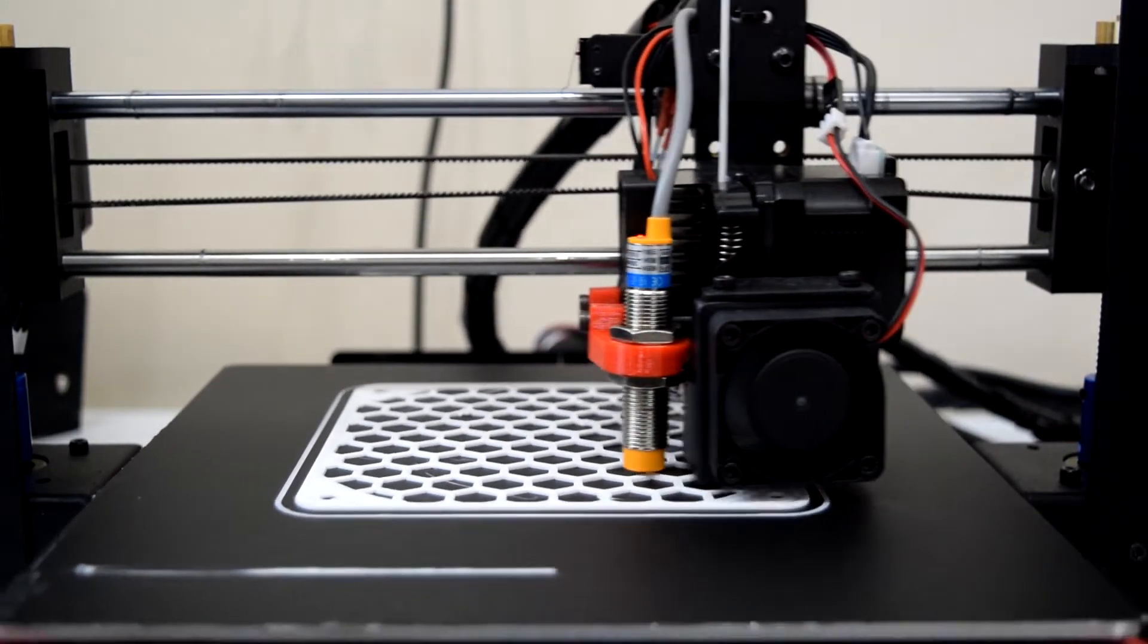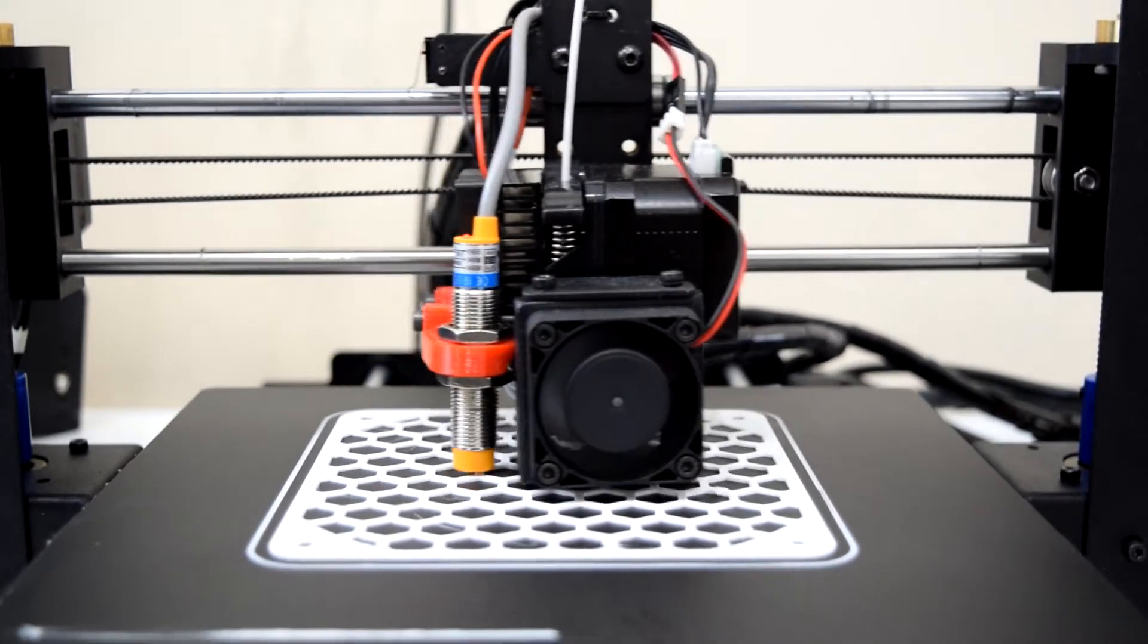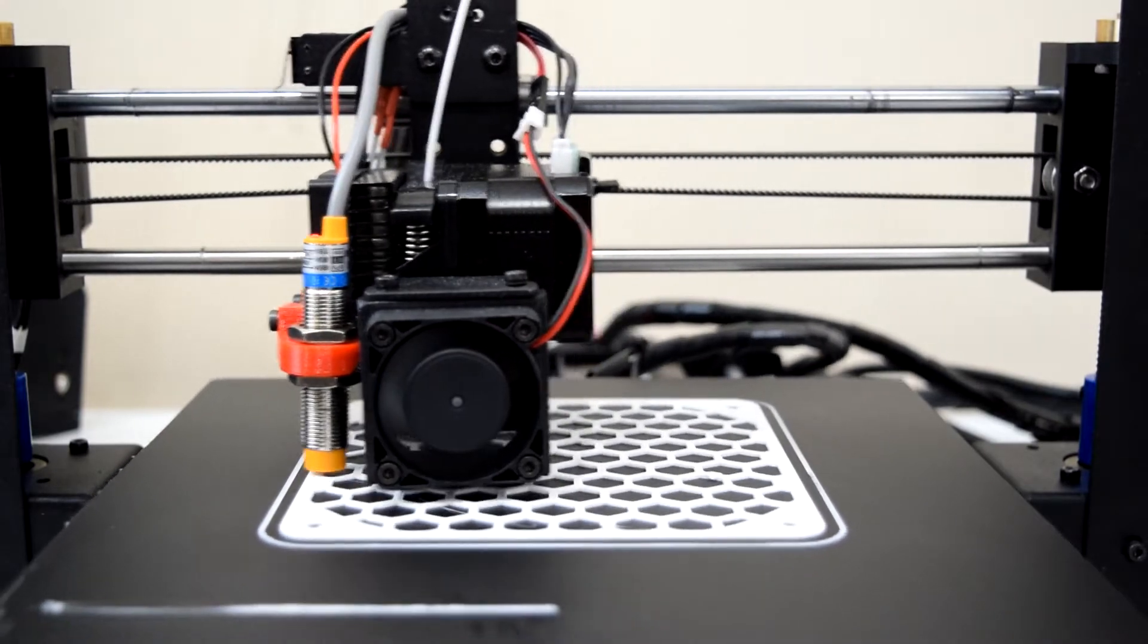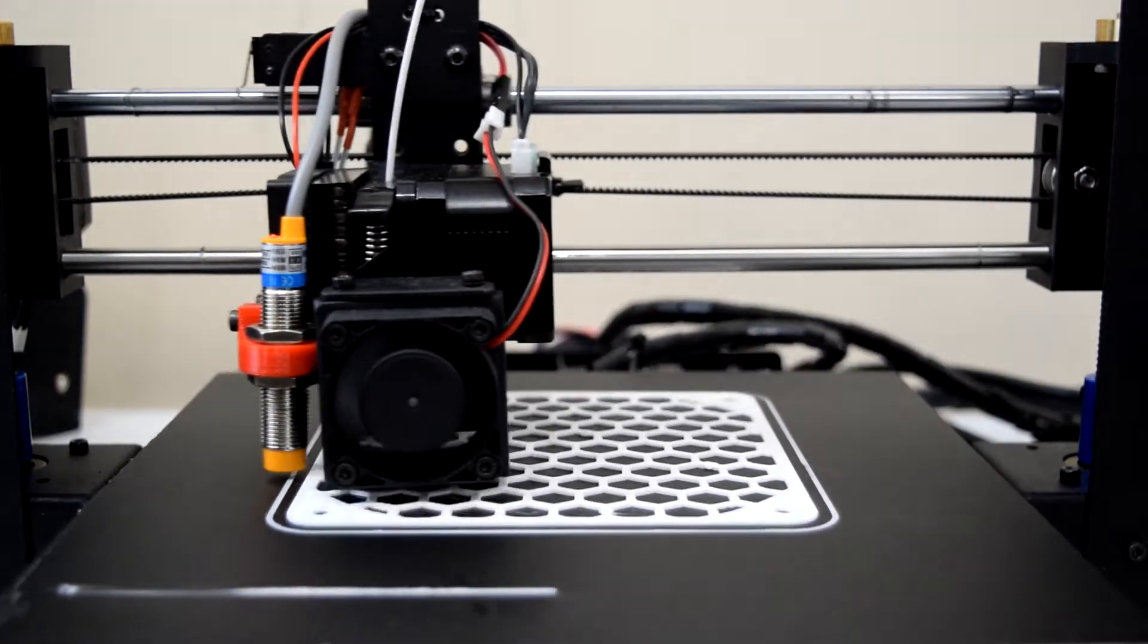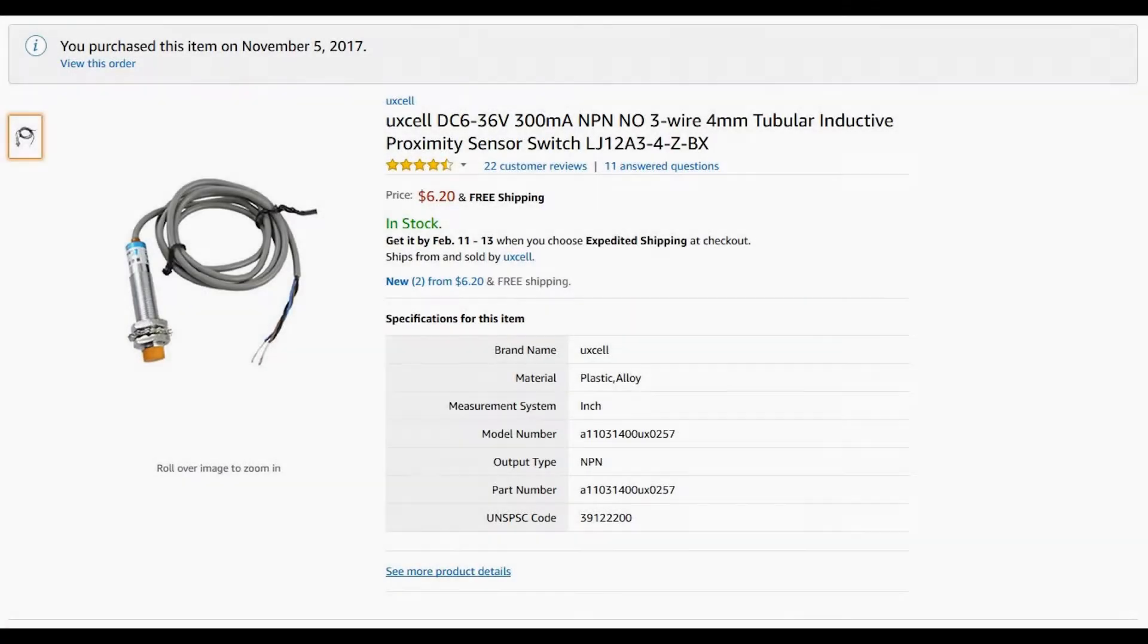Since uploading that video, I've gotten a few messages from some of you having a hard time getting that method to work as expected for one reason or another. The biggest issue however seems to be with the reliability of the sensor that I suggested in the video description. The inductive sensor I recommended is a 6 volt to 36 volt NPN sensor that has about a 4 millimeter detection distance.